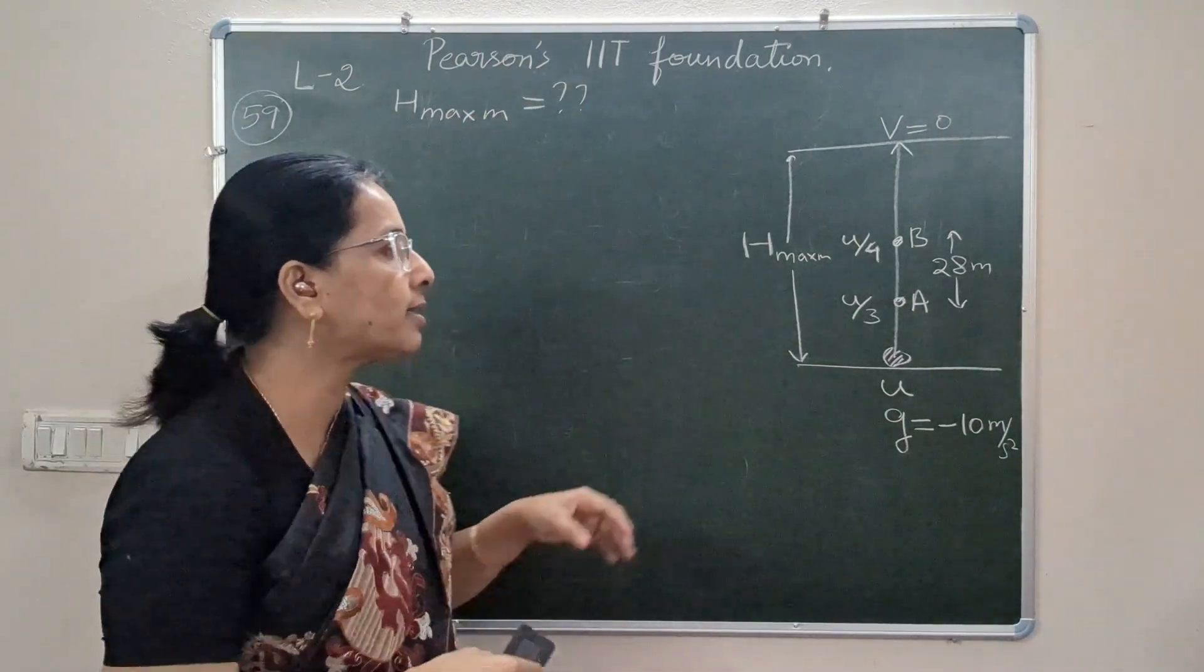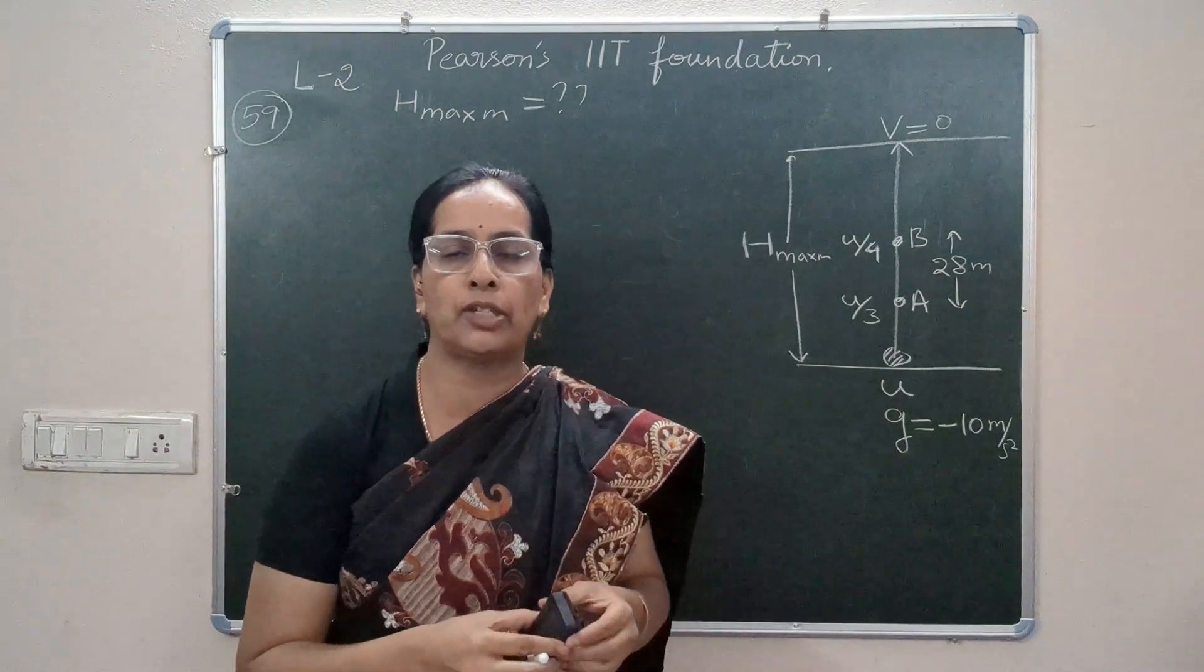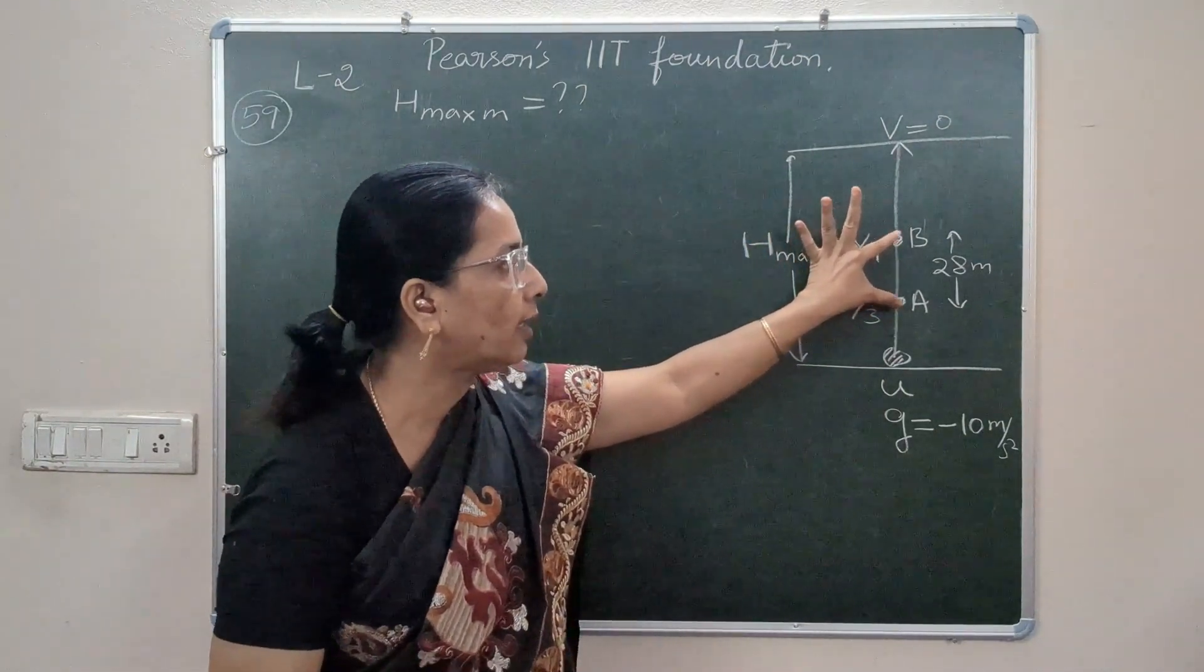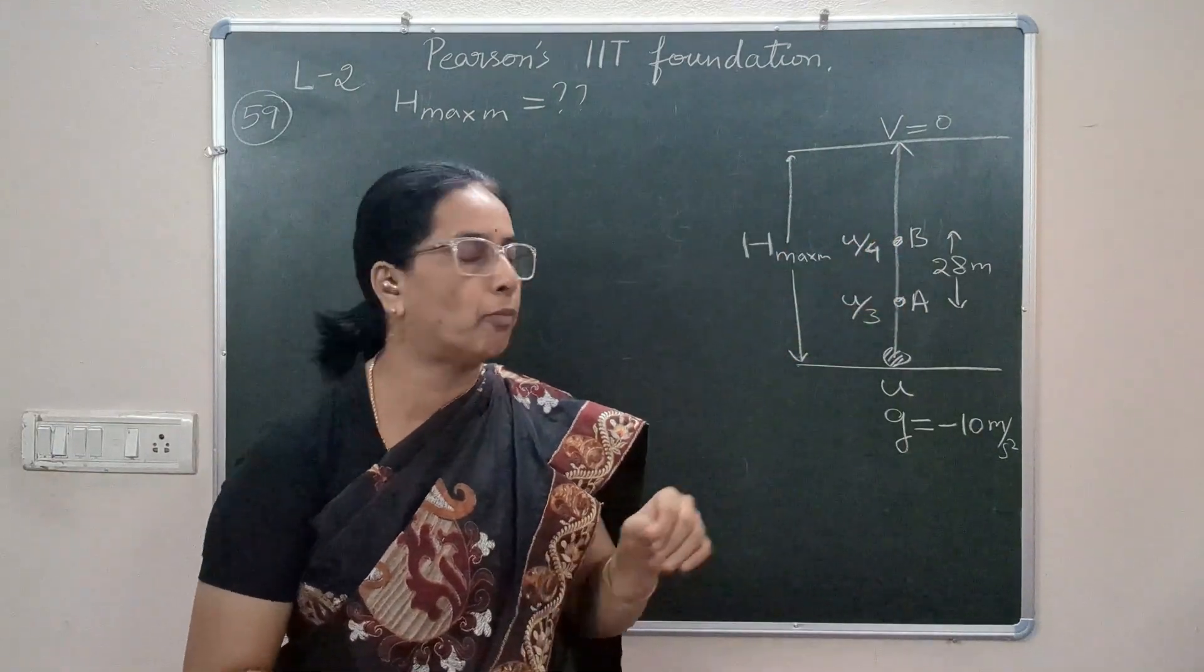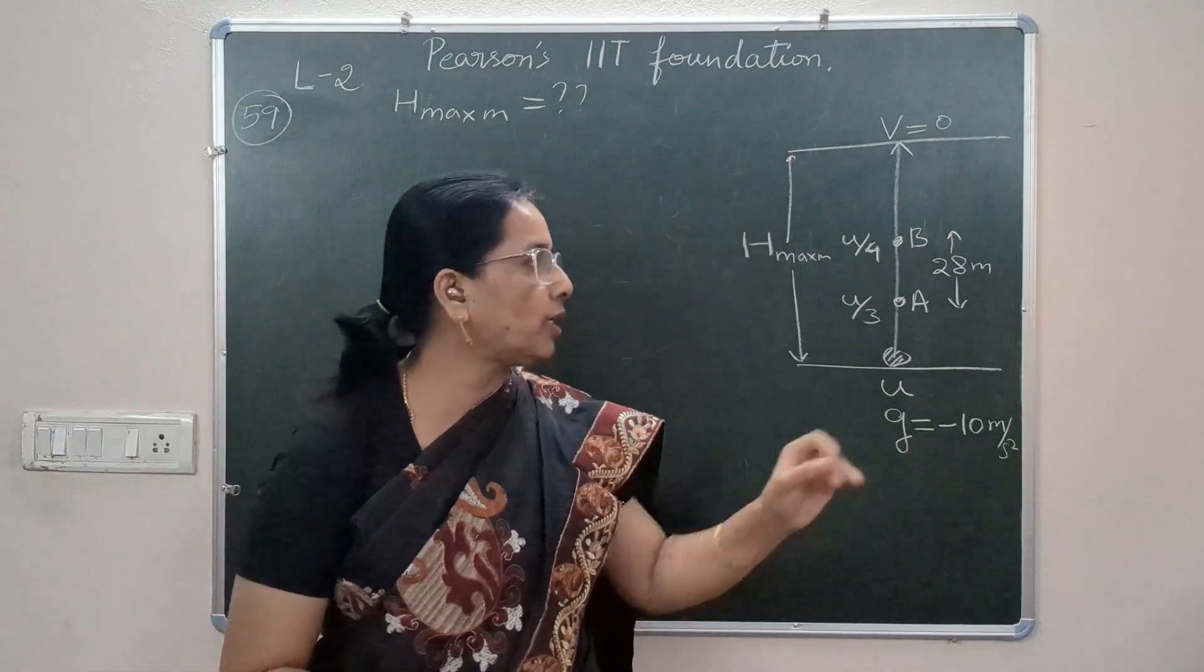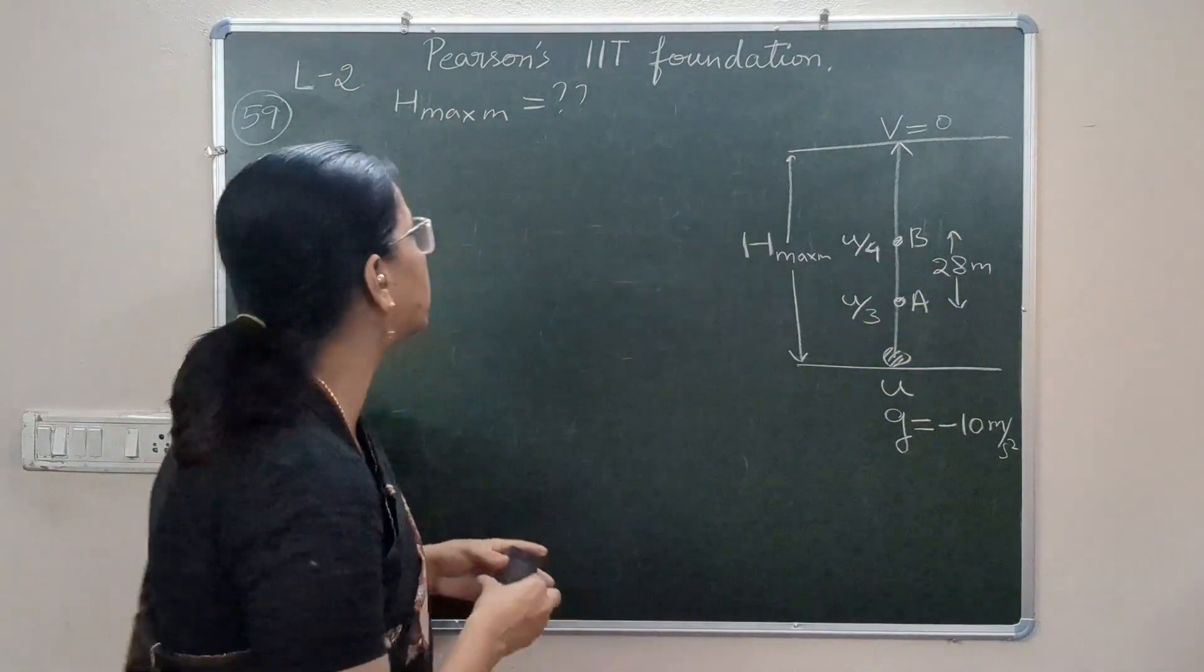To find h_max we should know the initial velocity of throw. For that purpose we will consider this part of the journey. Here we will apply the third equation of motion, that is v² - u² = 2gh. h is 28.